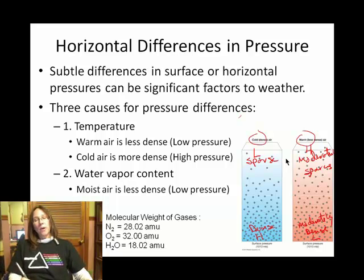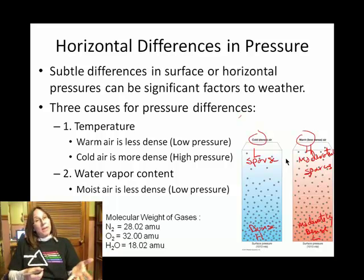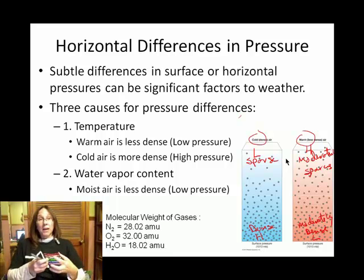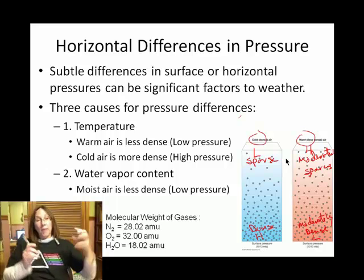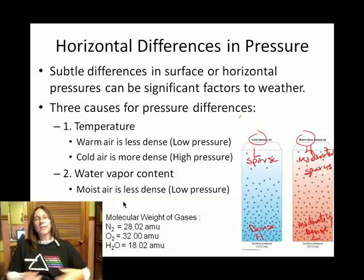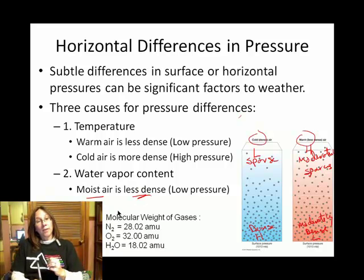Another cause is water vapor content. Remember, water vapor is a variable gas, and this one's a little counterintuitive. You think muggy, high humidity days, and it seems like that air is dense. But actually, air that has a lot of water vapor, even though it might be hard to breathe, is actually more buoyant. So moist air is less dense than dry air.